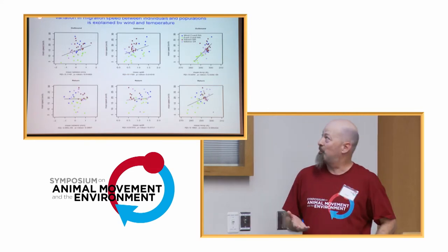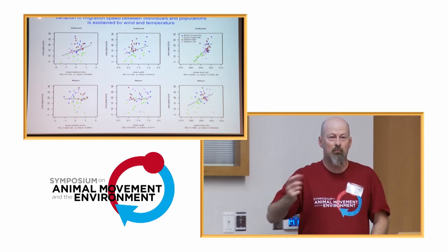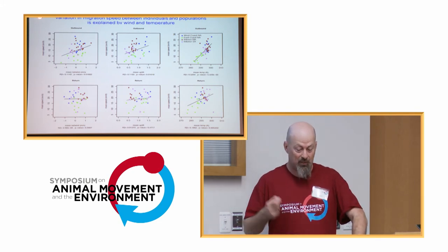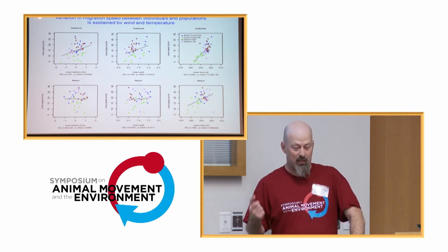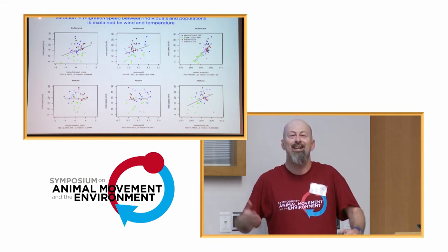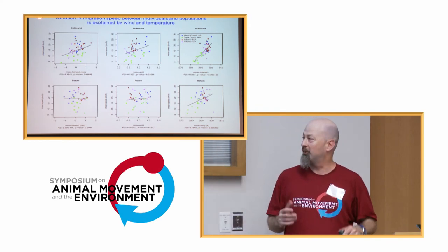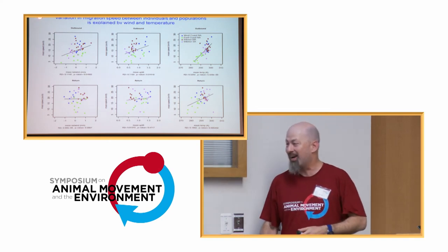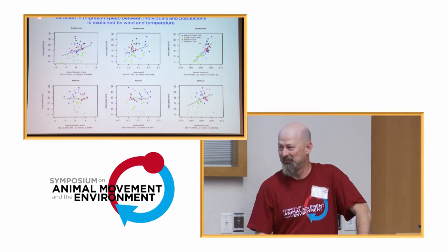Following the same approach but analyzing movement speed: when temperature is high they move fast, when uplift is strong they move fast, and when tailwind is strong they move fast. This is all true in the outward migration. In the return migration, they seem to not care about any of these factors - almost lazy flying, not optimizing anything. Keith has some ideas about why they behave that way, because you would expect the opposite.